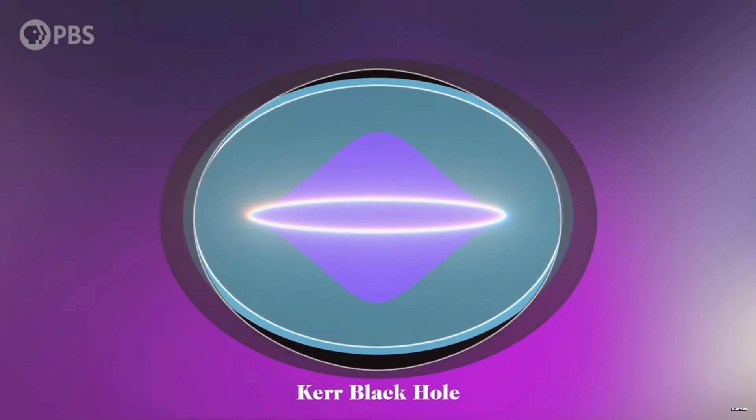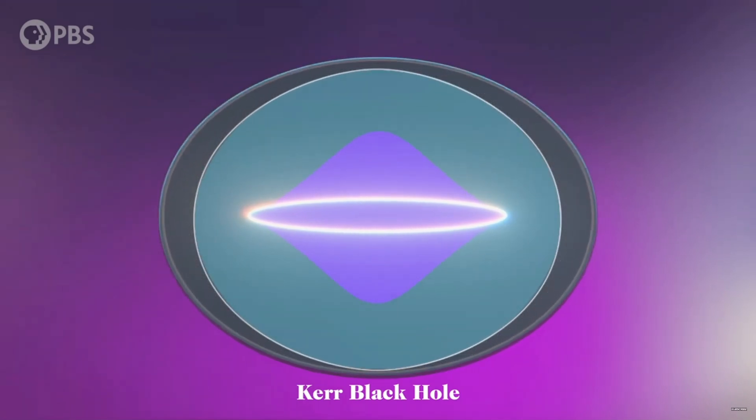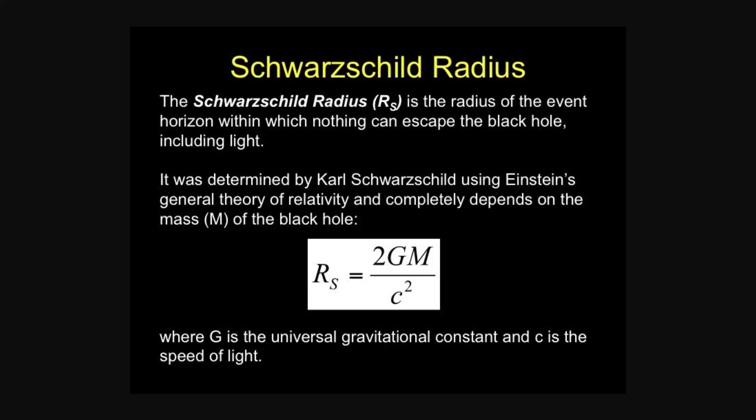However, there's a problem. If you want to increase the charge of a black hole, you must add charged particles, which, after all, have mass. If you recall the equation from earlier, radius Schwarzschild equals 2 times the gravitational constant times the mass of the black hole divided by the speed of light squared.